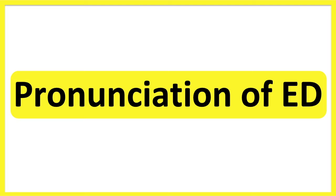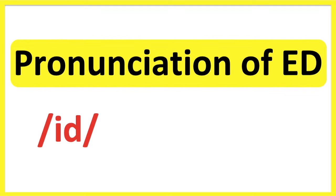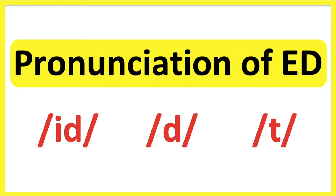Pronunciation of E-D. In this video, we will learn how to pronounce the letters E-D at the end of words. Words ending in E-D can either make the 'id' sound, 'd' sound, or 't' sound. This depends on the final consonant in the root word.